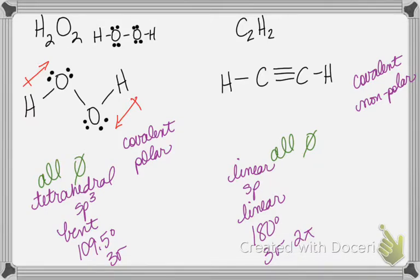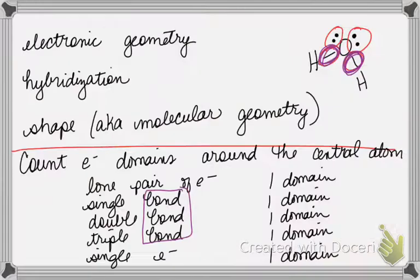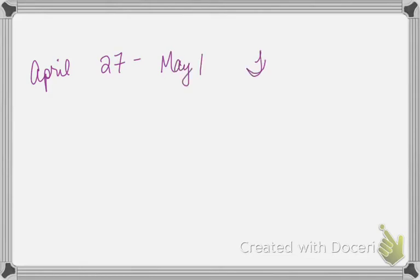I encourage you to print another worksheet and work it again in preparation for your test next week. Use the completed worksheet as your key, but try to work it without looking at your notes or the chart. Next week — April 27 through May 1 — you will take a test on chapters 8 and 9. It will be a Lewis Structures test on Canvas, and we will also do a review for the final.